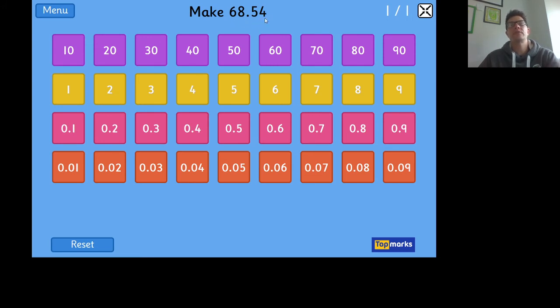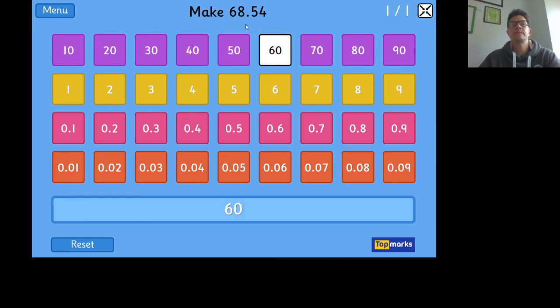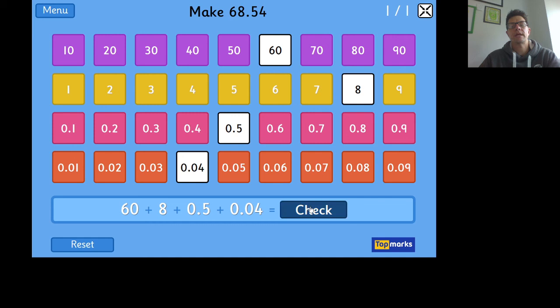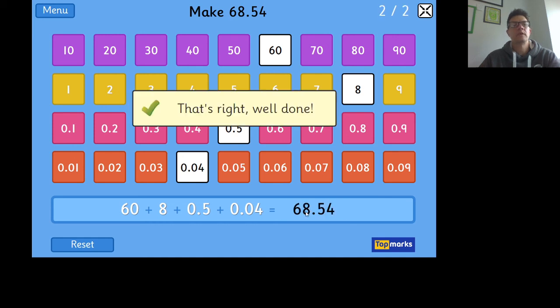So 68 is 60 plus 8 ones. As we move into the decimals, we've got 5 tenths and then 4 hundredths. If we check this, it should be correct—and it is.